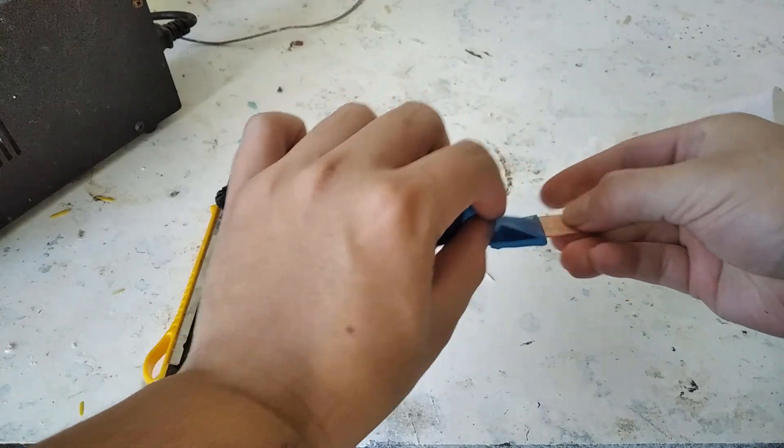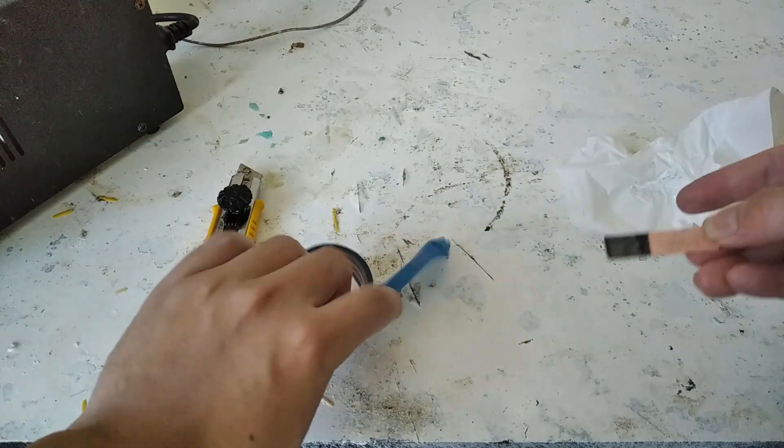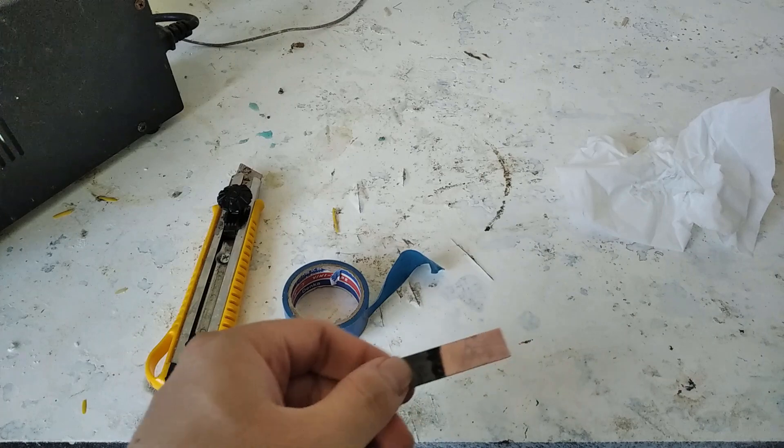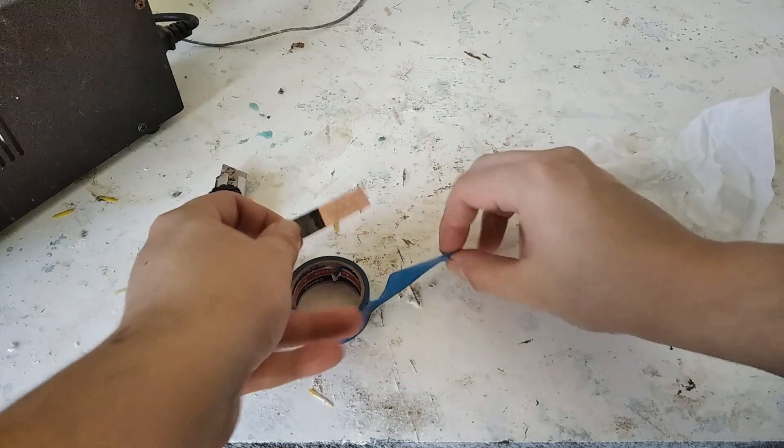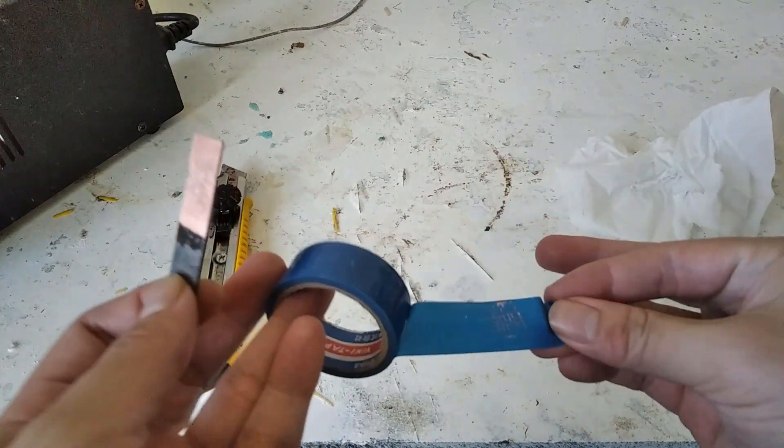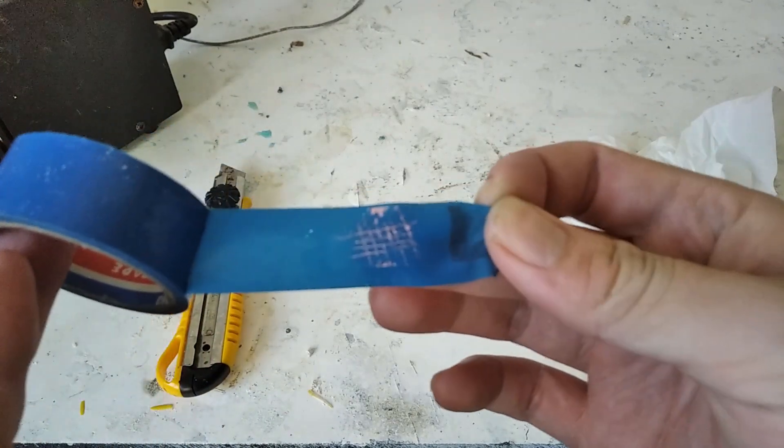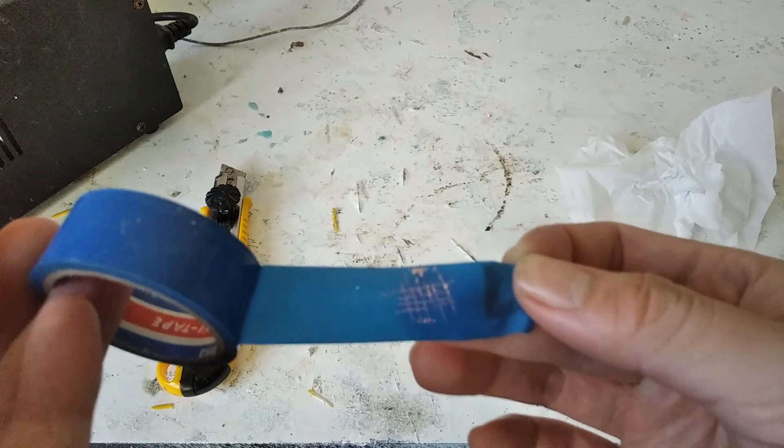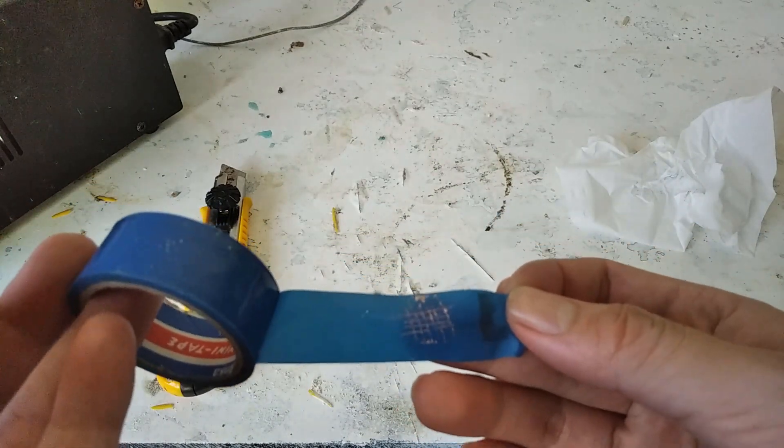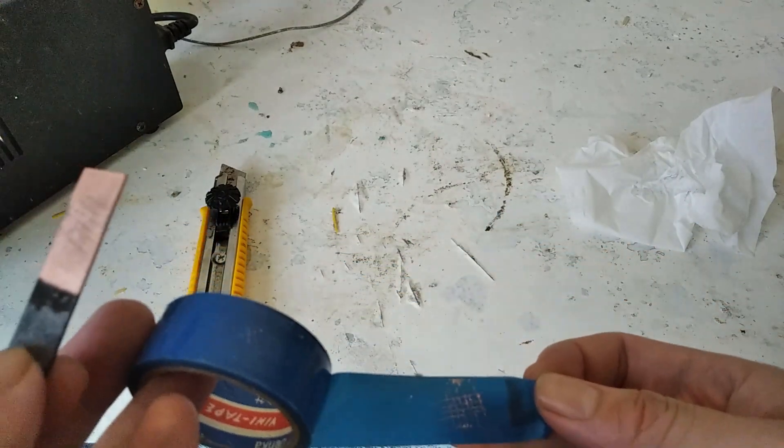If anything comes off with it, you know, depending on how much comes off will tell you how good the plating is. Now, what you can see here is the imprint. If this was a bad plating, you would see entire flakes come off once you've done this.